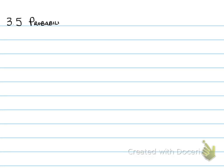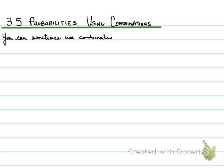Here we go. 3.5, probabilities using combinations. You can sometimes use combinations, or Pascal's triangle, to determine probabilities.